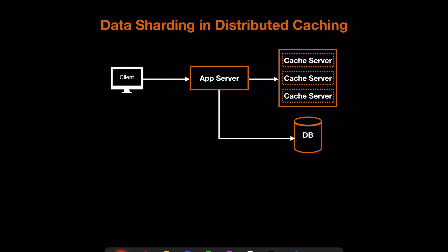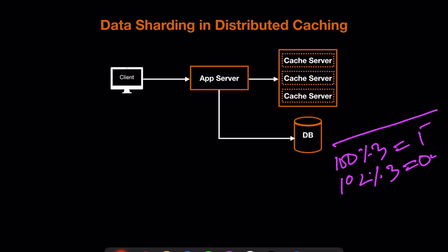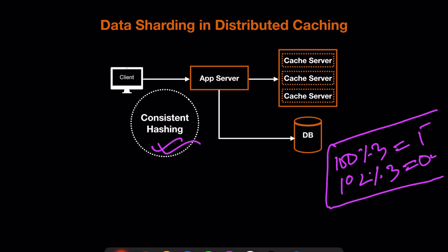In distributed caching with many cache servers, we need a mechanism to distribute load among them. A simple approach uses a hash function — for example, take a user ID, mod it by the number of servers, and route the request to the resulting server index. This works fine at small scale, but when dealing with thousands of servers that come up and down frequently, simple hashing breaks down. For a more robust solution, we can use consistent hashing, which is covered in a separate video in the same playlist.